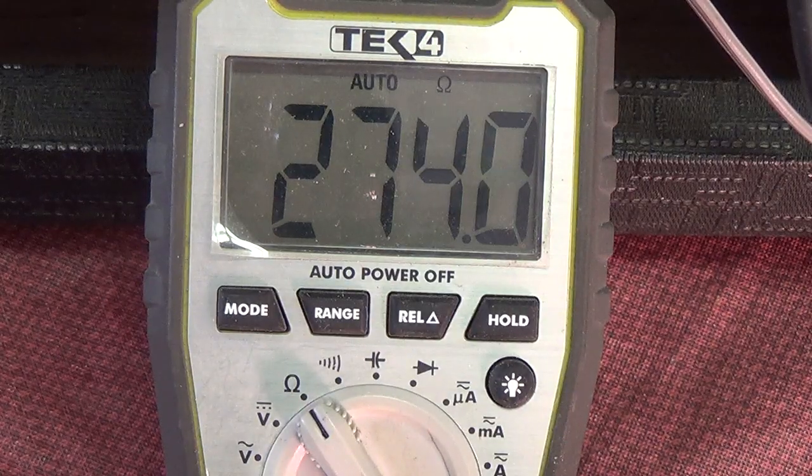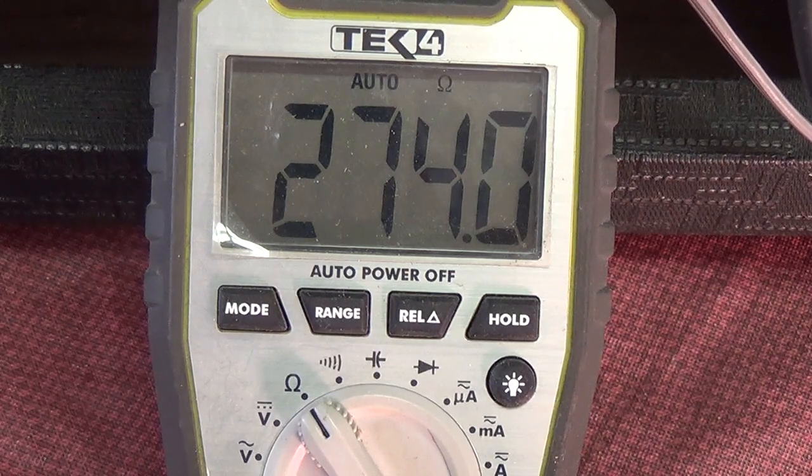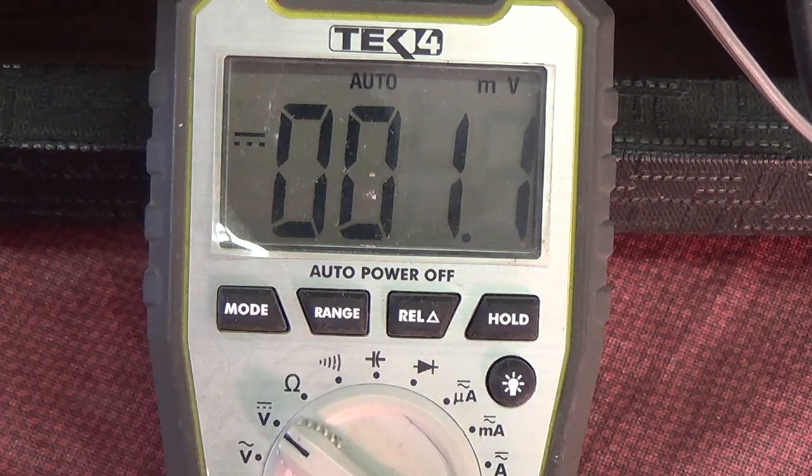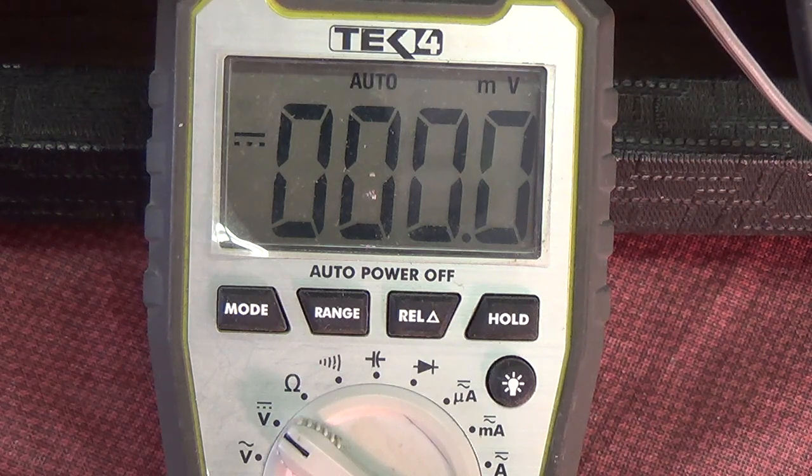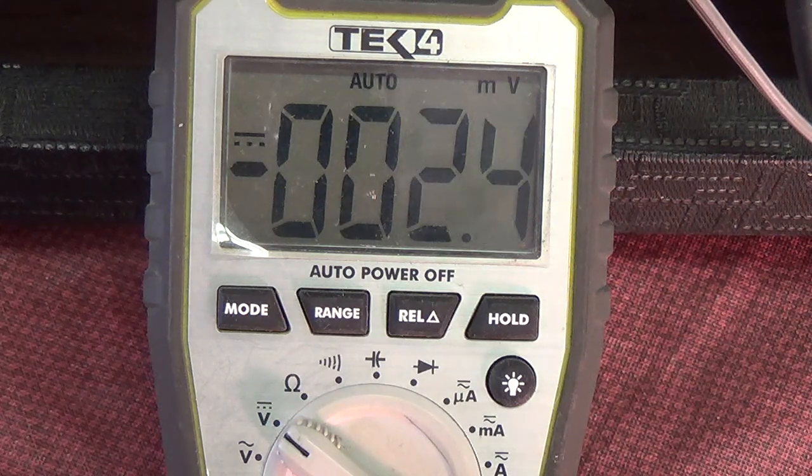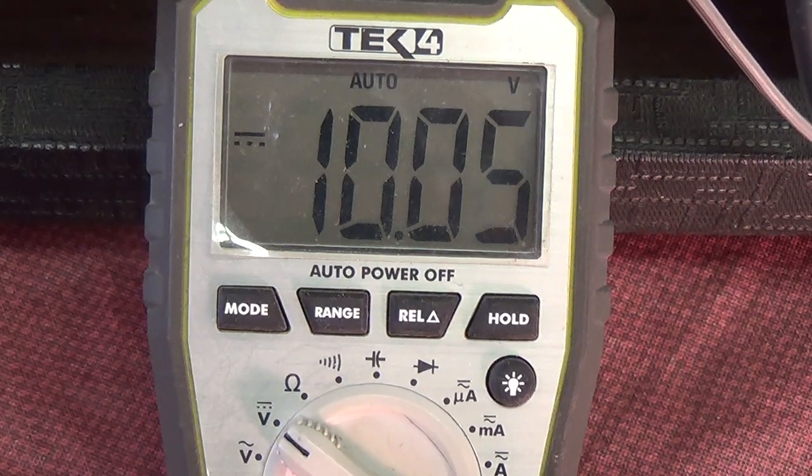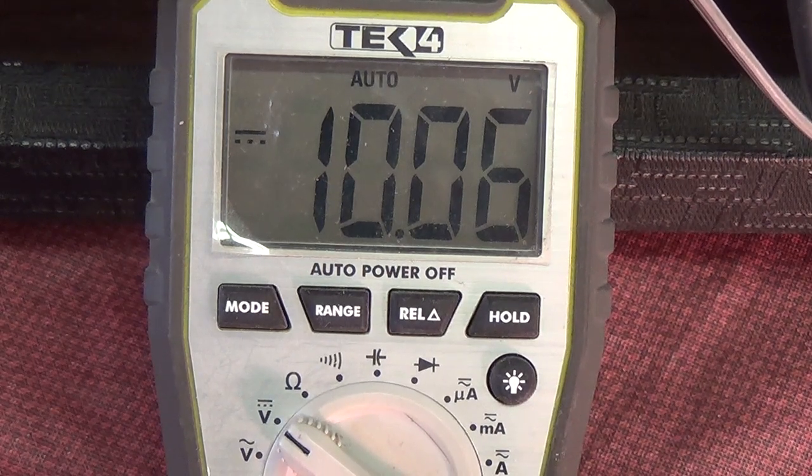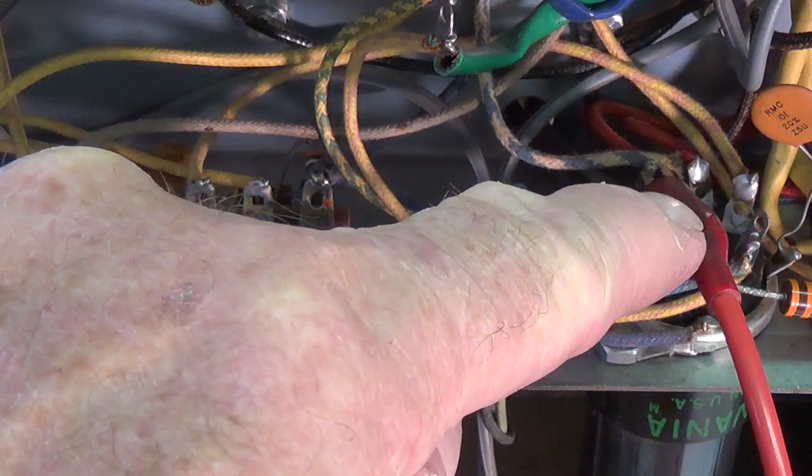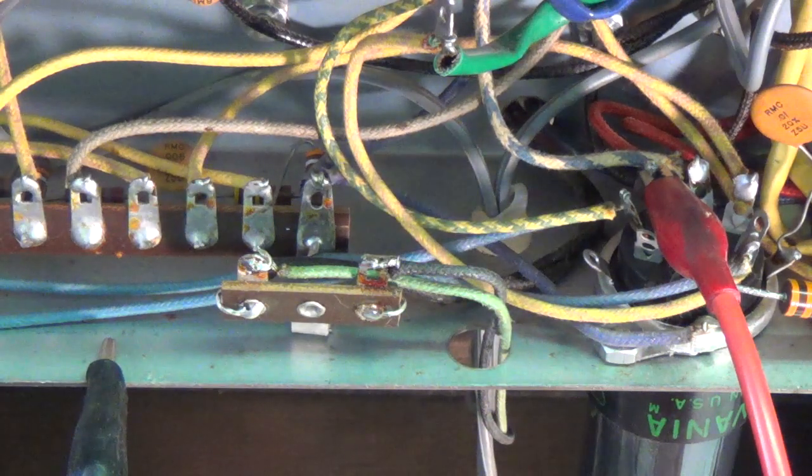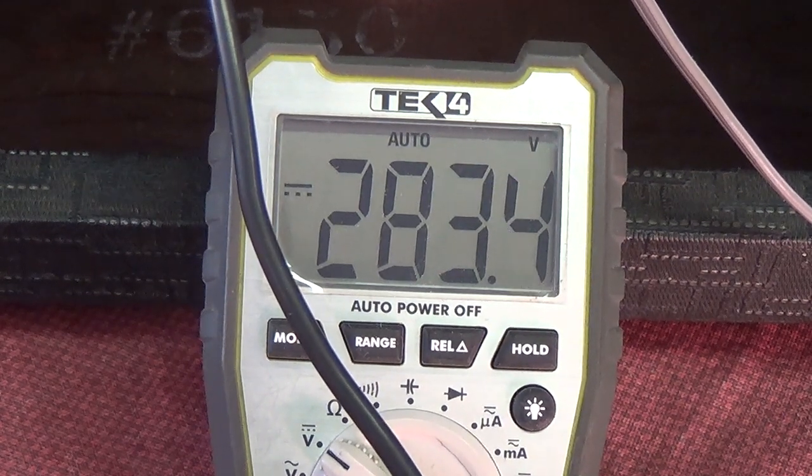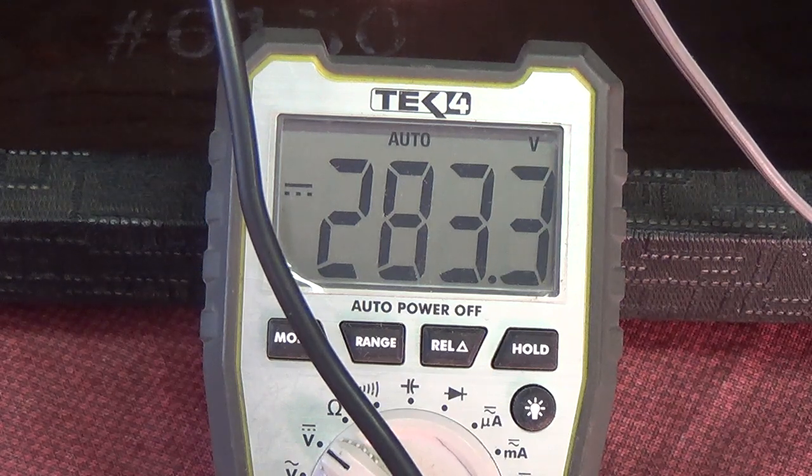And we can see that that resistance is about 274 ohms. Now, leaving my test leads in place, I'll move down here to DC volts, turn on the amplifier, and we're going to see what the voltage drop is across the primary winding of the output transformer. And it appears to have stabilized at about 10.06 volts. And then finally, we're going to measure the B-plus between the plate, or pin 3, of the 6V6 and ground. And it's stabilizing at about 283.3.